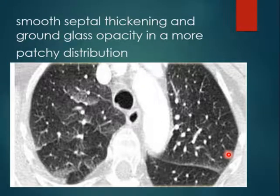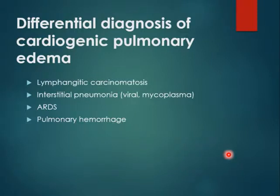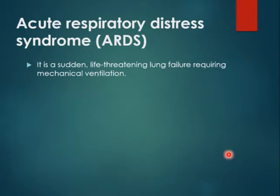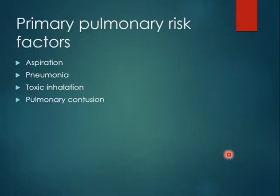The differential diagnosis of cardiogenic pulmonary edema includes lymphangitis carcinomatosa, interstitial pneumonia such as viral or mycoplasma atypical pneumonia, ARDS, and pulmonary hemorrhage. ARDS is a sudden life-threatening lung failure requiring mechanical ventilation. Risk factors include aspiration pneumonia, toxic inhalation, and pulmonary contusion — in our area pulmonary contusion is prominent due to high incidence of road traffic accidents and trauma.